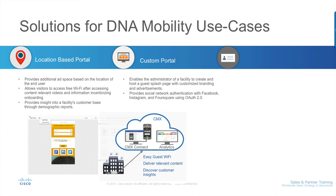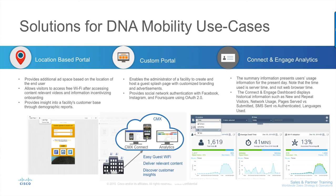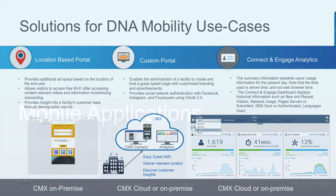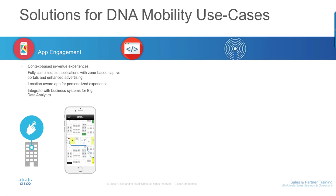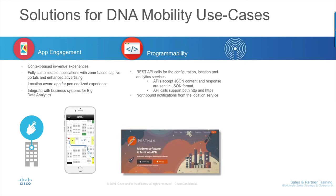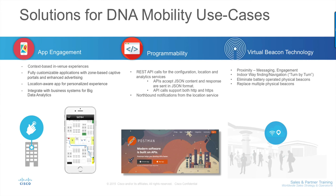The Connect and Engage dashboard displays historical information such as new and repeat visitors as well as network usage. App-based engagement enables in-venue experiences for fully customizable applications with zone-based captive portals, enhanced advertising and location-aware apps for personalized experience. This is possible with northbound notifications from the location service and REST APIs that accept JSON queries and responses for configuration, location and analytics over HTTP and HTTPS. The virtual beacon technology eliminates the need for battery-operated physical beacons and enables proximity messaging and indoor wayfinding navigation use cases.